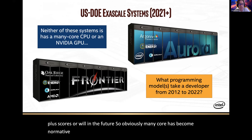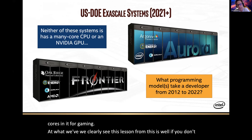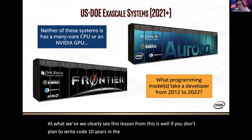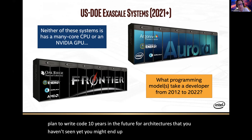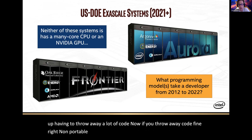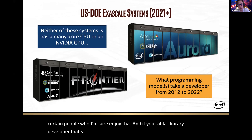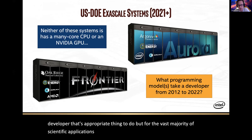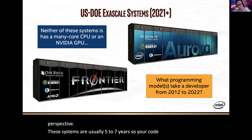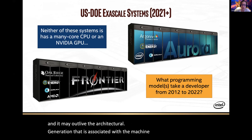The lesson from this is: if you don't plan to write code for architectures you haven't seen yet, you might end up feeling bad and having to throw away a lot of code. If you like throw-away code, fine — write non-portable code for every machine that comes along. But for the vast majority of scientific applications, we need to have at least a 10-year perspective. These systems are usually five to seven years, so your code outlives the system and may outlive the architectural generation associated with the machine. Focus on standards — that's the message.